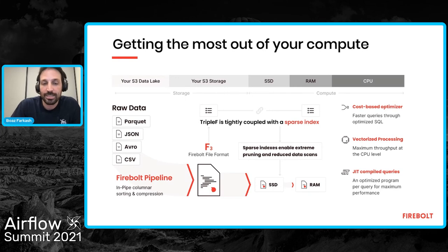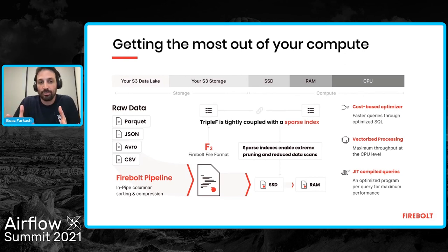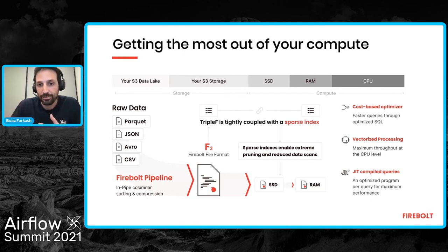When a query comes in, the sparse index tells the query engine which very particular ranges of data to pull from storage — only the ones that participate in the query. This creates extreme data pruning, meaning much less data is scanned compared to other query engines. In the cloud, with huge datasets, analytic queries most of the time look at fractions of the big dataset, so we do a lot of scanning to figure out which portions are needed. Sparse indexing radically reduces the amount of data scanned and moved around — this in itself creates a huge performance gain and is one of the foundational building blocks in how Firebolt manages storage tightly coupled with indexing.